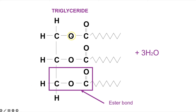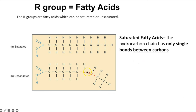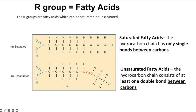Fatty acids can be saturated or unsaturated depending on whether they contain single or double bonds between carbon atoms in the hydrocarbon chain. A saturated fatty acid has only single bonds and holds the maximum number of hydrogens. An unsaturated fatty acid has at least one double bond, so it's not fully saturated, and that double bond causes a kink in the chain.